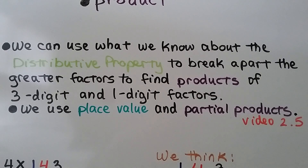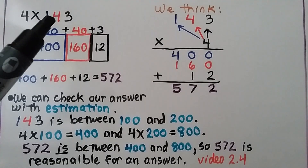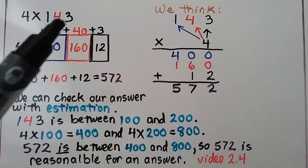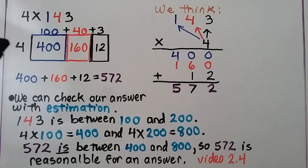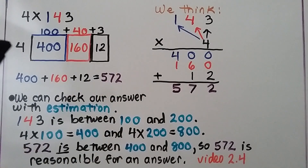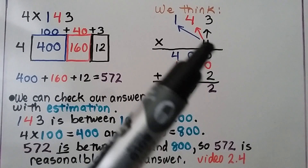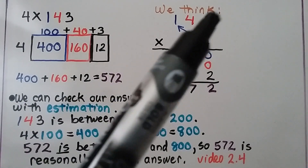We can use the distributive property to break apart greater factors to find products of 3-digit and 1-digit factors using place value and partial products. Here we have 4 times 143. We break 143 into 100 plus 40 plus 3. Starting with the greatest place value: 4 times 100 is 400. Then 4 times 40 is 160. Then 4 times 3 is equal to 12.